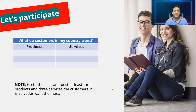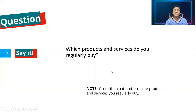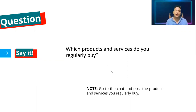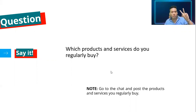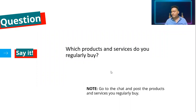Let's move on. This next question asks: which products and services do you regularly buy? Go to the chat and post the products and services you regularly buy. I want you to post at least one product and one service that you buy regularly — one of the products you buy most or one of the services you use most.